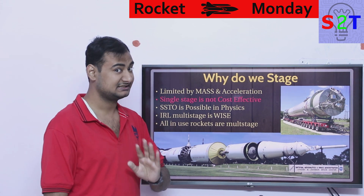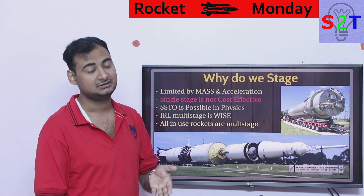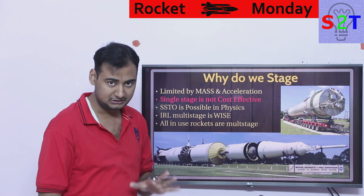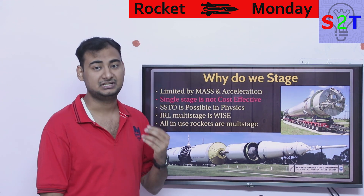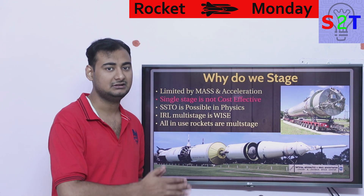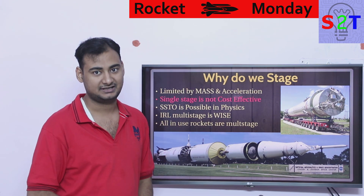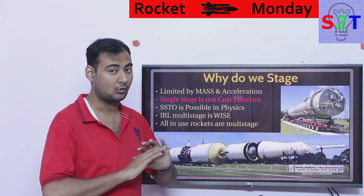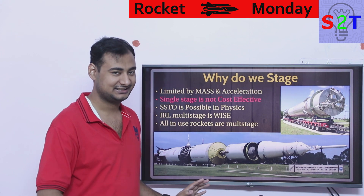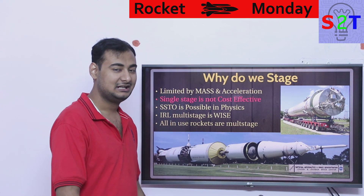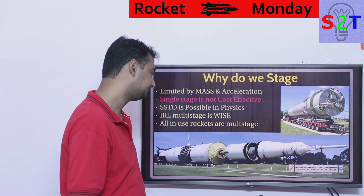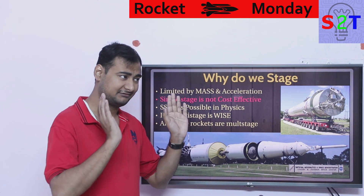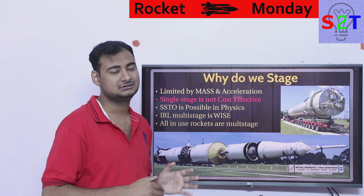SSTO is possible in physics — our first lunar modules were single stage to orbit, so it's not impossible. It's just that on Earth, in real life, multi-stage is the wiser choice. Even Elon Musk and Jeff Bezos are constrained by budget, because rockets are at a whole different level — an F1 engine is like hundreds of Ferraris worth of performance.